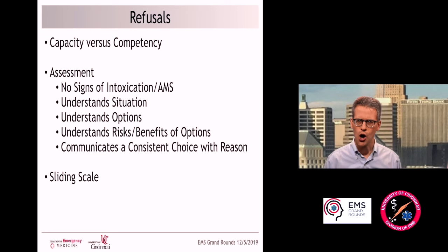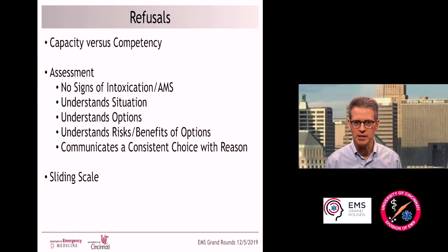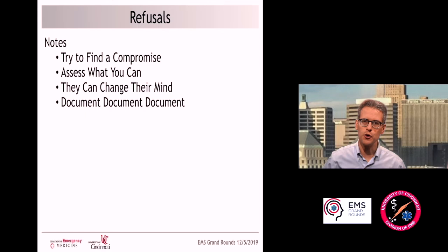If it's a minor traffic accident, everyone's belted, low speed, no apparent injuries, and people want to refuse, you can set the bar a bit lower. But if you're really worried, set that bar very high — maybe so high that no one has enough capacity to refuse. The key principle: if and only if the patient demonstrates they have capacity can you allow them to refuse.